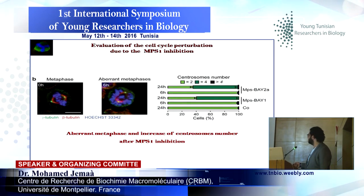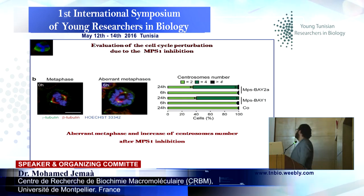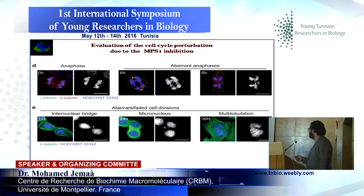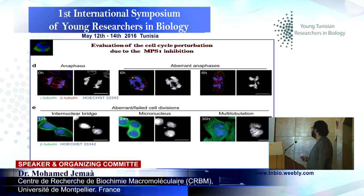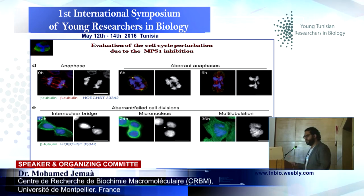We can clearly see some aberrant metaphases comparatively to the control situation. Look at this beautiful metaphase in the control condition — and after MPS1 inhibition, the metaphases are completely disorganized and aberrant. We also noted an augmentation in the number of centrosomes. During anaphase, comparatively to the control, we are in the presence of aberrant anaphases. During cell division, we can see internuclear bridges — bridges between two nuclei — or micronuclei, or even multi-lobulation.